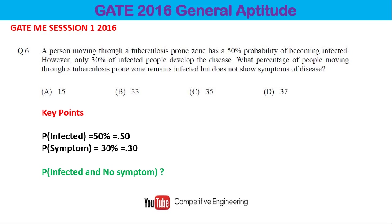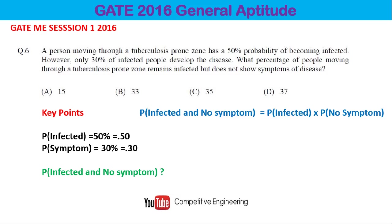The question asks: what is the probability that a person is infected but not showing symptoms? We can write this as the probability of 'infected AND no symptom,' which equals the probability of infected multiplied by the probability of no symptom.